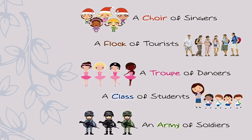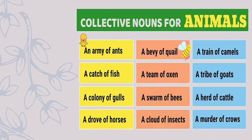Now here is a recap poem to sing the collective nouns together: an army of ants, a bevy of quail, a train of camels, a catch of fish, a team of oxen, a tribe of goats, a colony of girls, a swarm of bees, a herd of cattle, a drove of horses, a cloud of insects, a murder of crows. Sing this poem again and again and in no time you'll know them all!